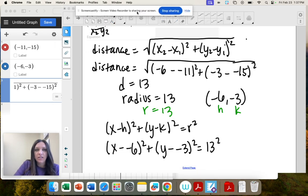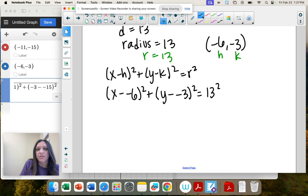I need a tiny bit more room just to clean it up here. So these two, minus minus is plus, minus minus plus, 13 squared is 169.